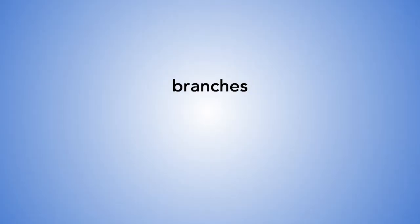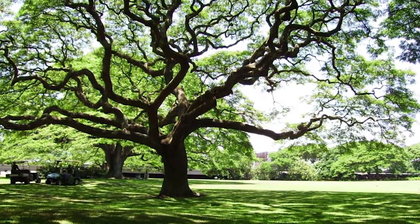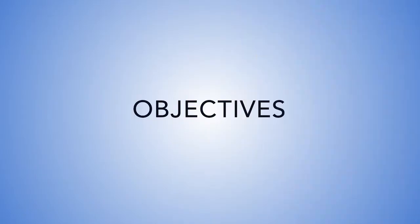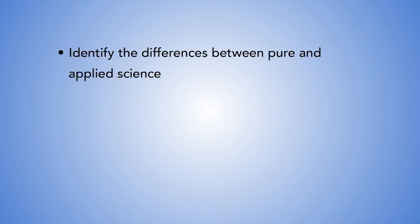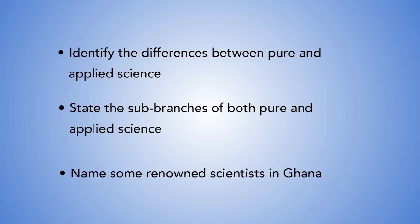Now, when we say branches, which organism comes to mind? Good — plants or trees, right? We can liken science to a tree with lots of branches. But before we start today's lesson, let's look at the objectives. By the end of this lesson, you should be able to identify the differences between pure and applied science, state the sub-branches of both pure and applied science, and name some renowned scientists in Ghana.